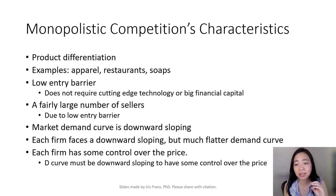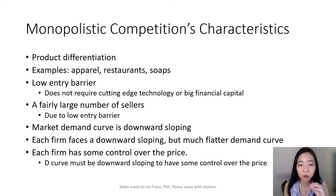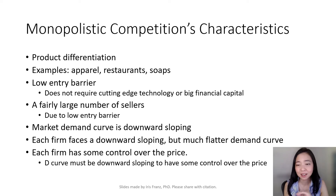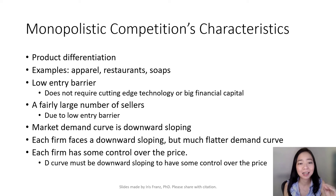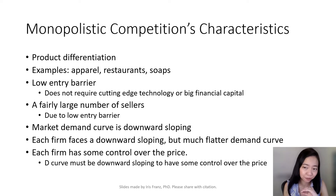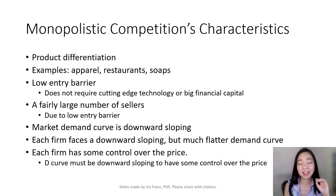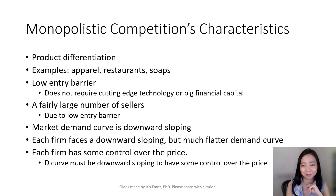The market demand curve is always downward sloping. However, each firm will be facing a downward sloping and yet a lot flatter demand curve. Each firm is facing a much flatter demand curve than the market demand curve. And because the firm is facing a downward sloping demand curve, even though it's very flat, it's still downward sloping, and therefore the firm has a little bit of control over the price.